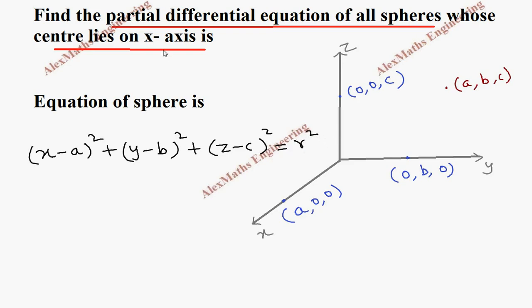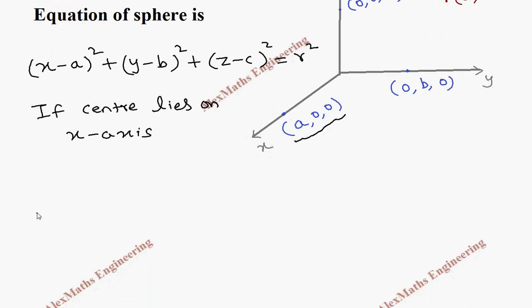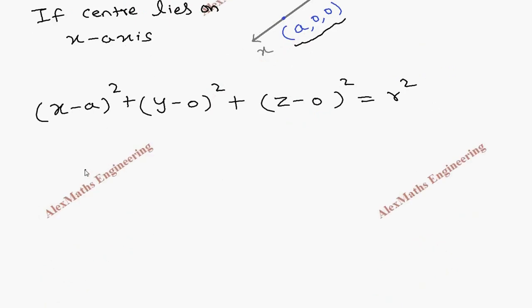But if the sphere has a center on the x-axis, as we discussed, the points ABC will become (a, 0, 0). So if I substitute this: (x - a)² + y² + z² = r².